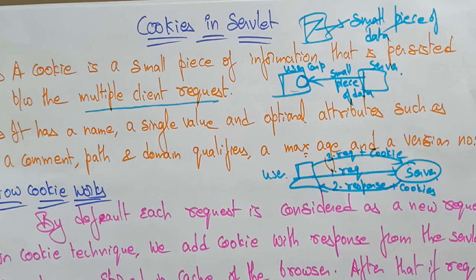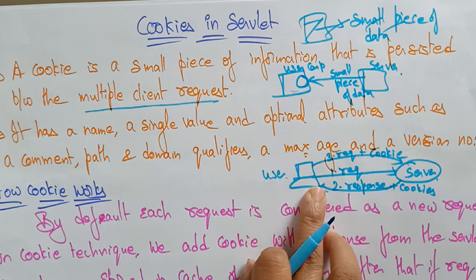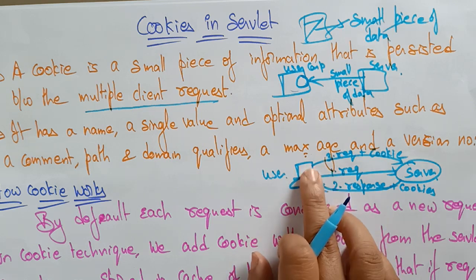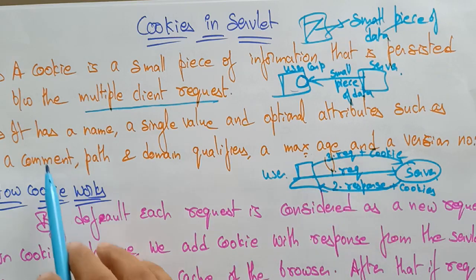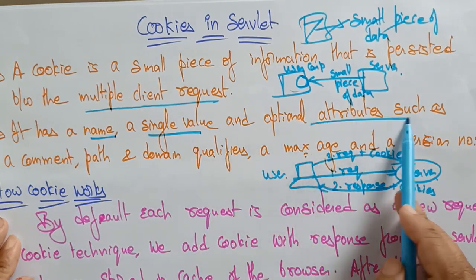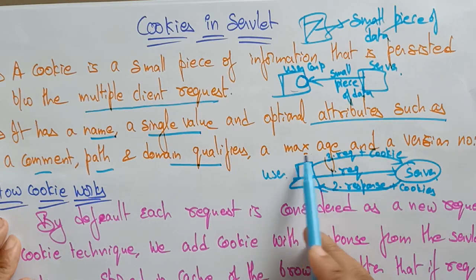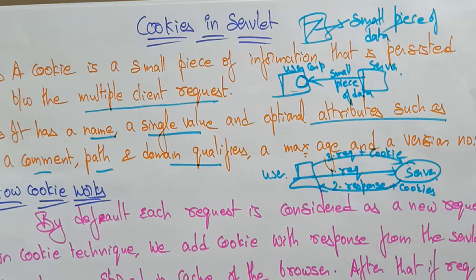A cookie is a small piece of data sent from a website and stored on the user's computer by the user's web browser while the user is browsing. A cookie has a name, a single value, and optional attributes such as comments, path, domain and qualifiers, a maximum age, and a version number.